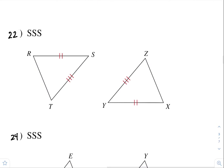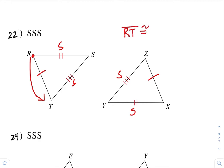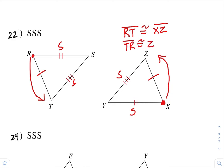Number 22. We have a pair of sides congruent to each other and another pair of sides. To prove these two triangles are congruent by SSS, you need a third side — forcing this side to be congruent to that side. Segment RT has to be congruent to XZ. That point is on the segment with the two tick marks, and the same for the other one. So RT has to be congruent to XZ, or vice versa, TR has to be congruent to ZX.